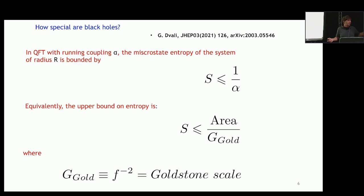The Goldstone here is the Goldstone of spontaneously broken Poincaré symmetry, because any object — a computer, whatever it is — always breaks Poincaré symmetry spontaneously. So basically you cannot store more information in your computer than the area of the computer divided by the Poincaré Goldstone scale. This is universal — this is the QFT bound on information.